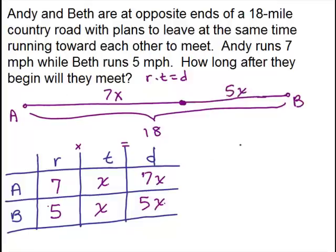So we look at the picture, right? Can you make an equation from that? Hopefully you see that this distance from here to here plus this distance from here to here is the same as the total distance of 18 miles. So we get the equation 7x plus 5x equals 18.